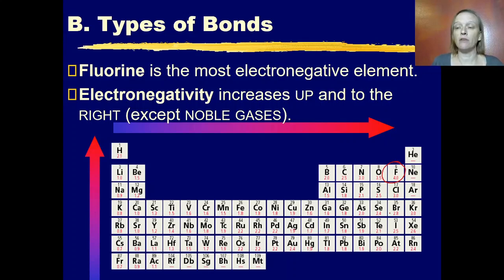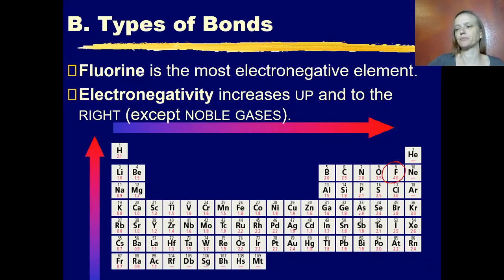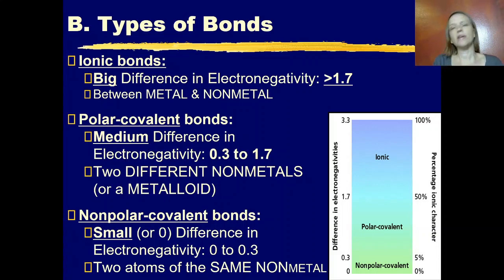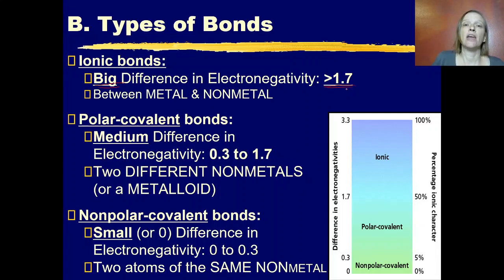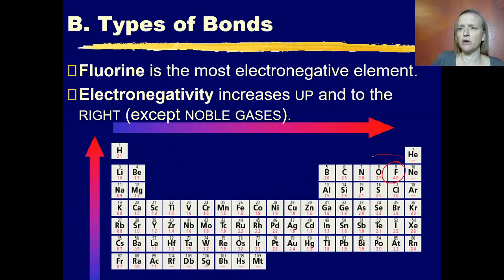This is a table of electronegativity values. Fluorine has the highest numeric value for electronegativity. Oxygen, chlorine, and nitrogen are also very high, but the further we move away from fluorine, the lower the values get, down to 0.7 for francium. We can tell if we have an ionic bond if there is a very big difference in electronegativity — a difference of more than 1.7. This typically happens between metals and non-metals because non-metals have very high electronegativity values and metals have very low ones.